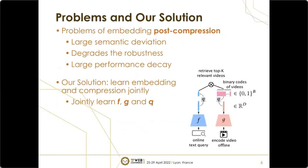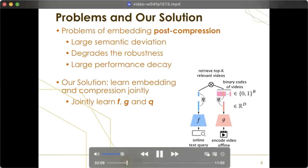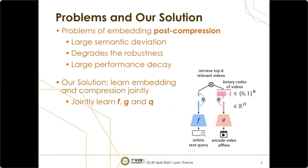However, independent compression on dense embeddings can lead to large semantic deviation, which degrades the representation robustness and incurs performance decay. To mitigate the performance decay, one promising direction is to learn embedding and compression jointly. Such ideas have been explored in related fields like text embedding quantization and cross-modal image hashing, demonstrating improvements over post-compression.